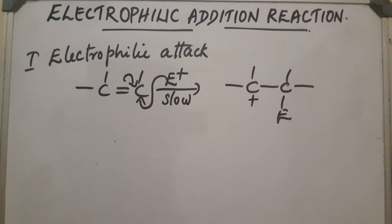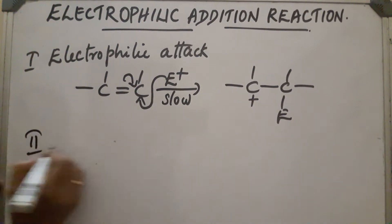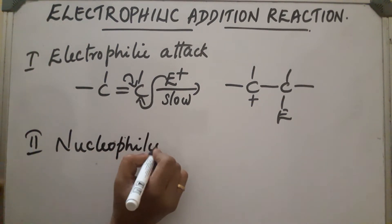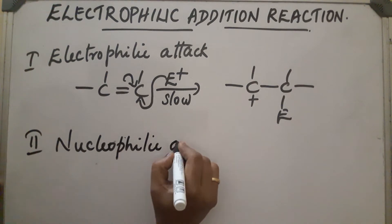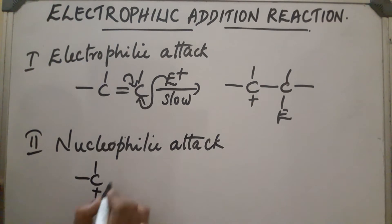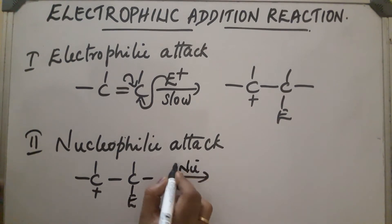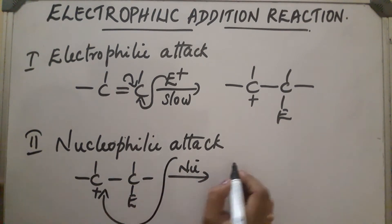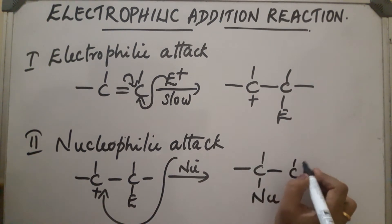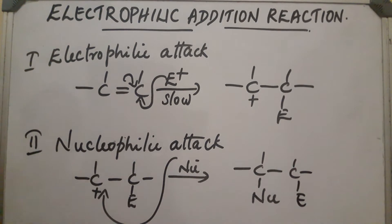The second step is nucleophilic attack. The nucleophile will come and attack the positive side of the substrate. So the compound will be formed with the pi bond broken and two new sigma bonds formed.